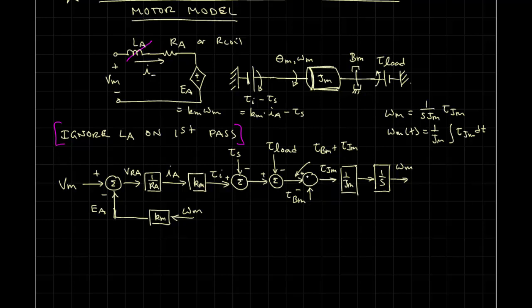We note that tau Jm was the difference between this input, which I'm calling tau Bm plus tau Jm, and tau Bm, which is coming back as a feedback path. What is tau Bm? Tau Bm is Bm, the viscous coefficient, times omegam, and we now have omegam. Let me actually redraw this one last time here.